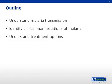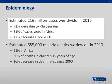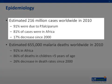According to WHO estimates, there were 216 million cases of malaria worldwide in 2010. Over 90% of cases were due to infection with Plasmodium falciparum, and the vast majority of cases occurred in Africa. Overall, the number of cases of malaria worldwide has decreased about 20% since 2000.